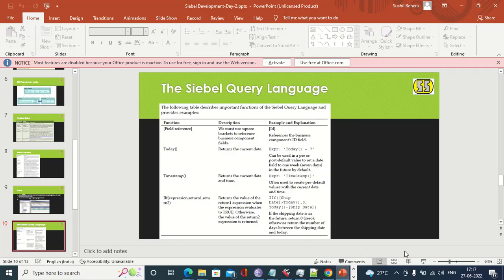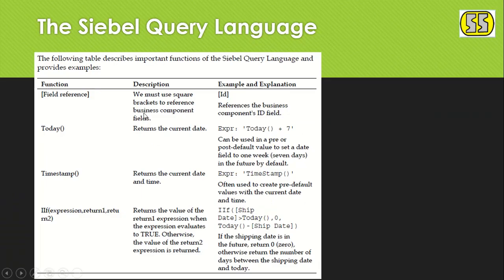Wherever we refer to a field inside Siebel, we write it within square brackets — e.g., [FieldName]. Siebel understands that anything written in square brackets is a field reference. To get today's date and time, we can write 'Today()' which returns the system date-time stamp.